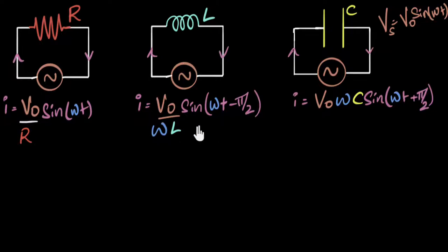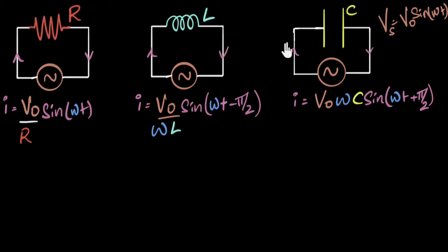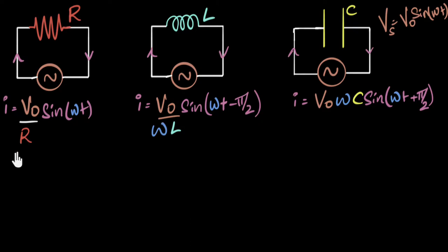We've already derived expressions for the current when you apply an alternating voltage across resistors, inductors, and capacitors. An interesting thing we saw in these two circuits is that even though there are no resistors, the current is limited — meaning there is some opposition provided by inductors and capacitors as well. The goal of this video is to figure out what exactly is that opposition, what do we call it, and how is it different from regular resistance.